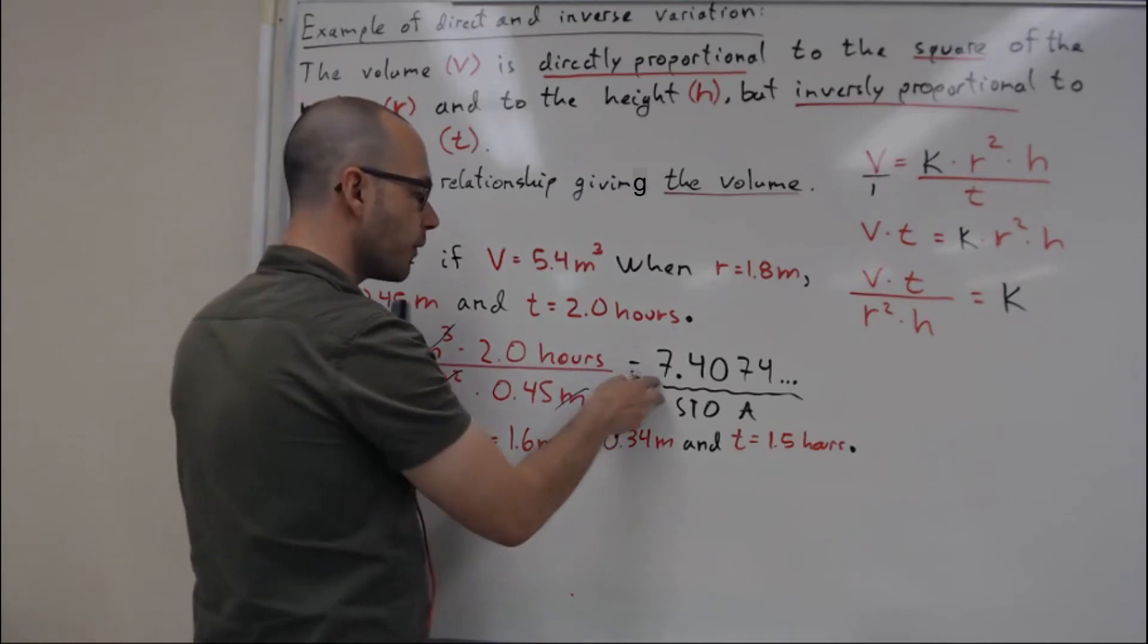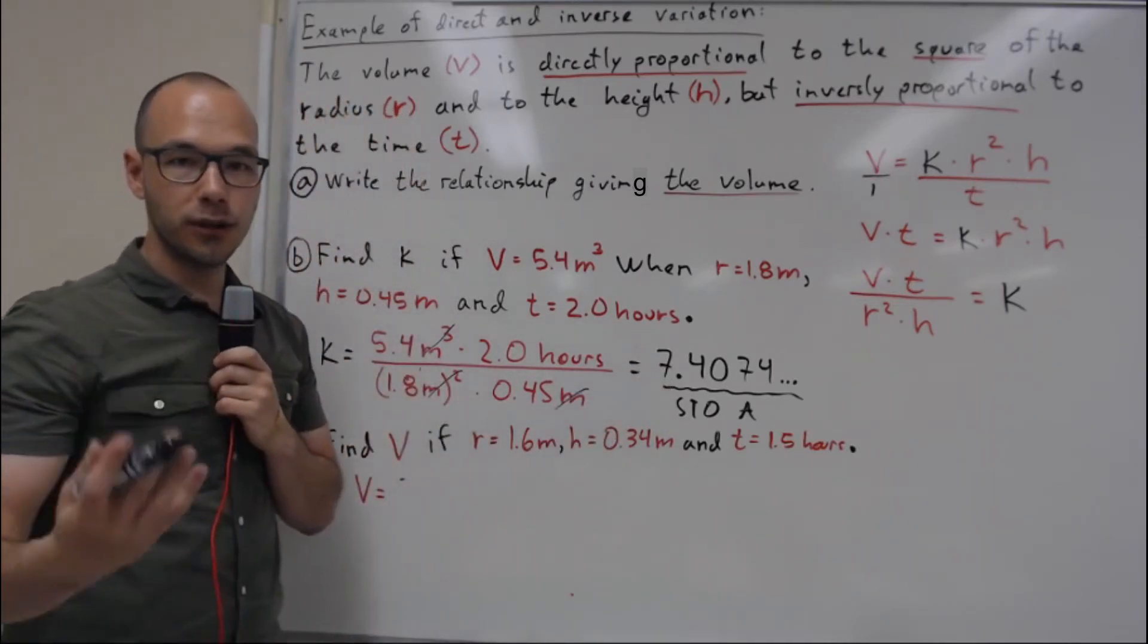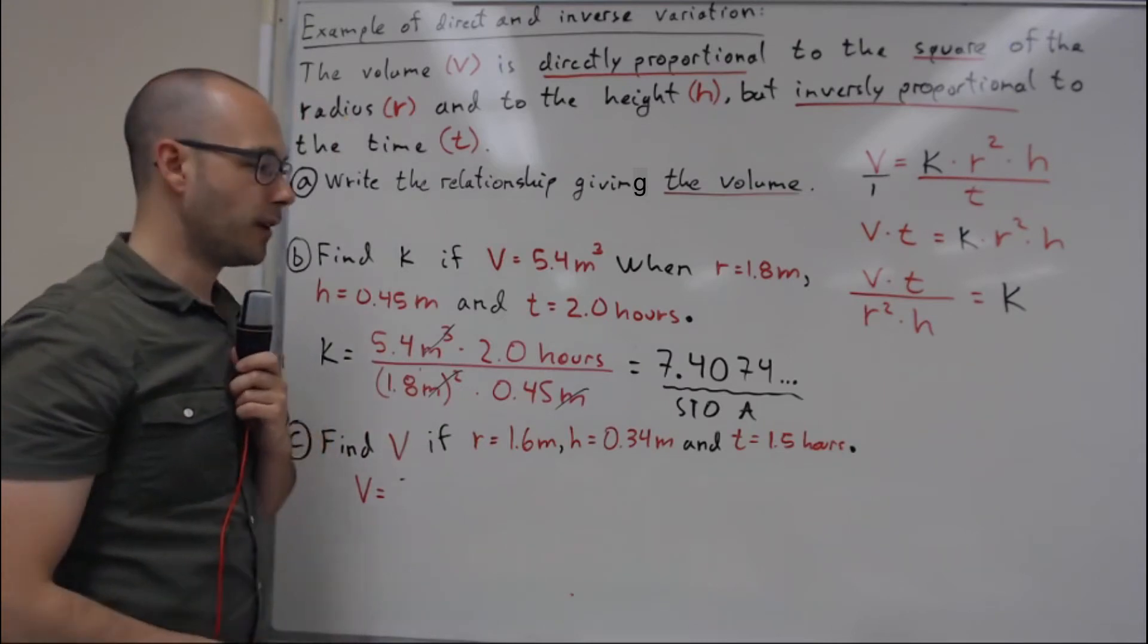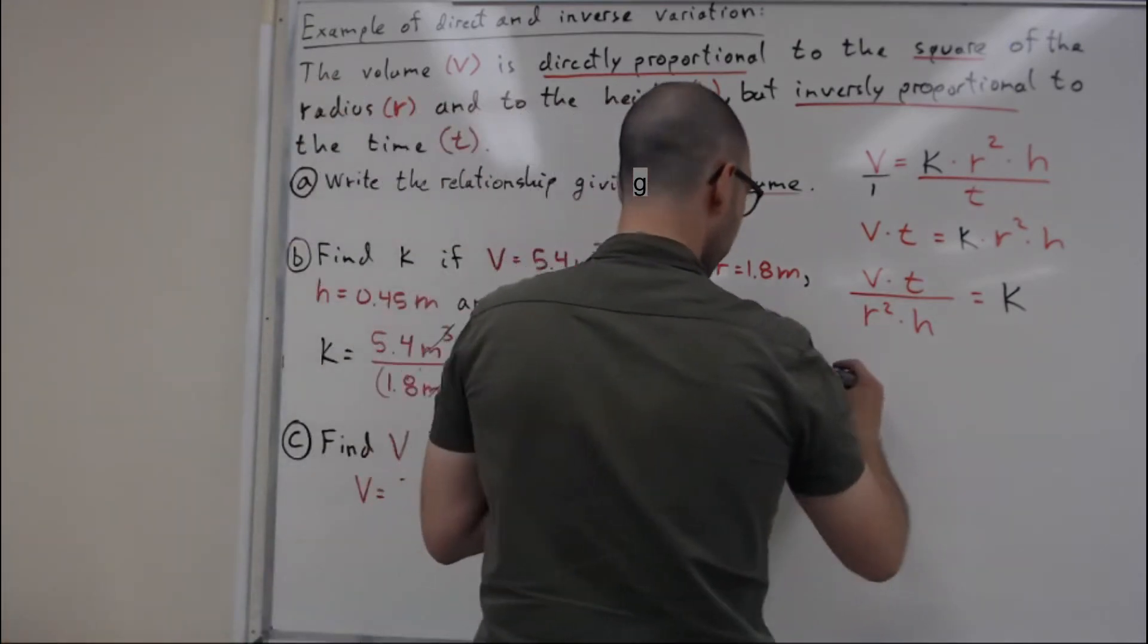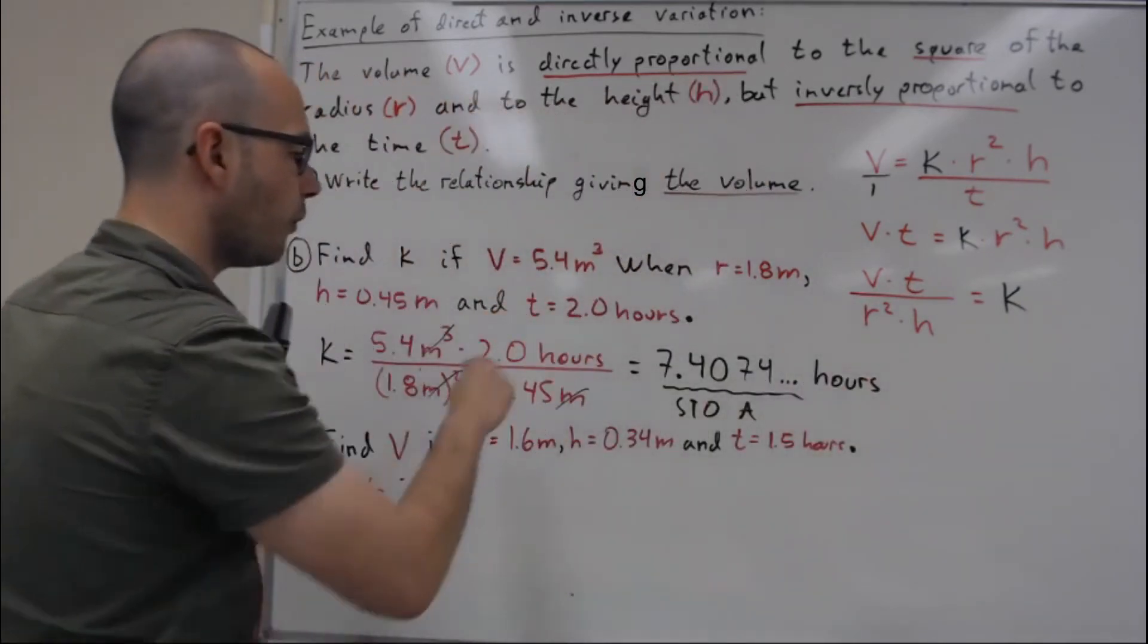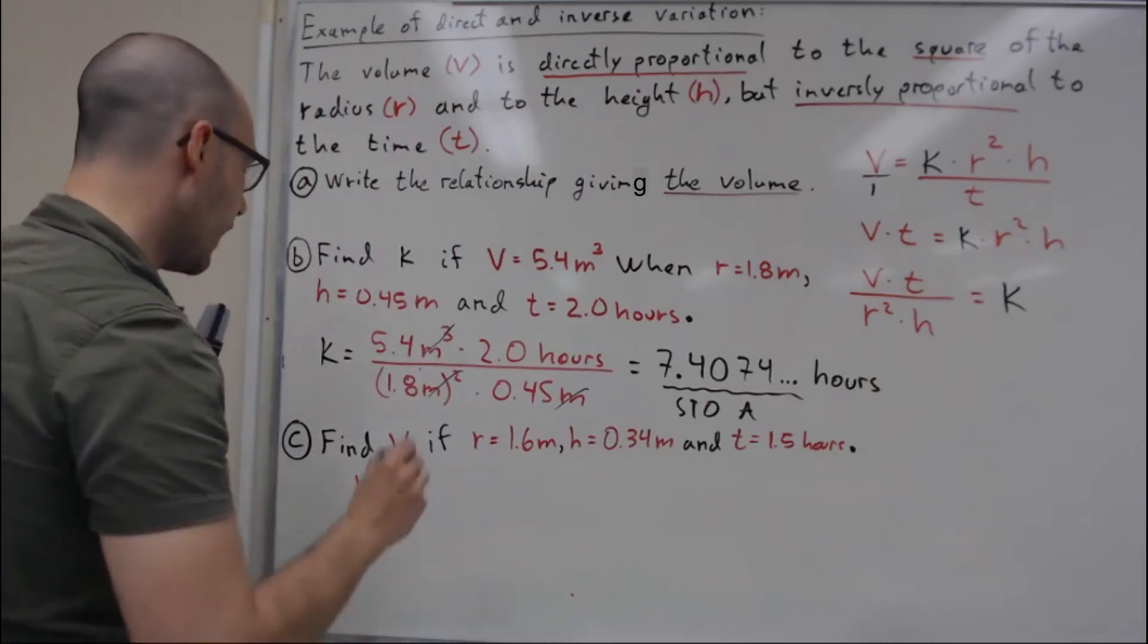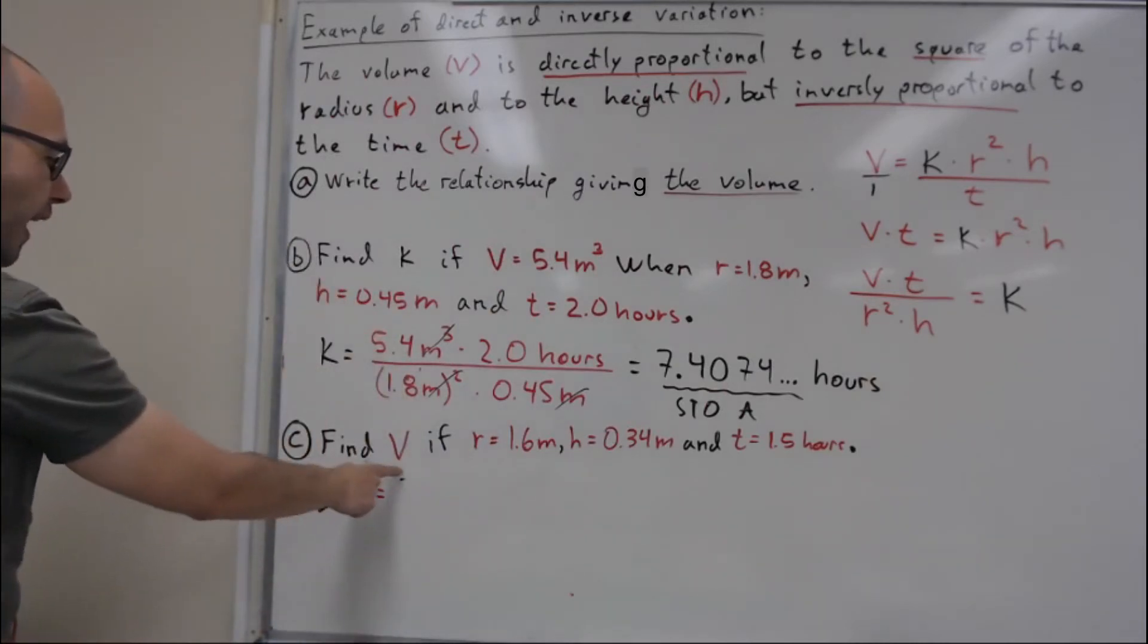And it's going to be in hours. So you always store that into your calculator and now we can find values of V for different values of r, h, and t using that constant k.